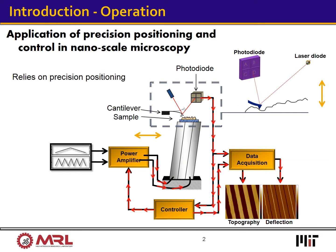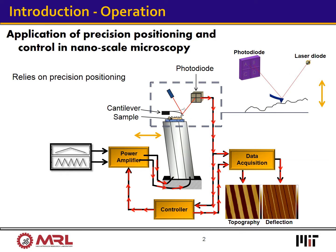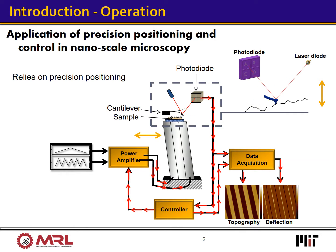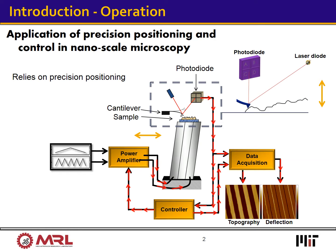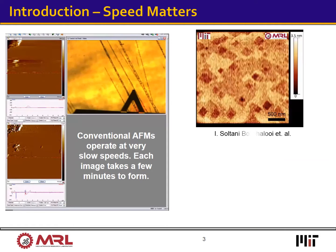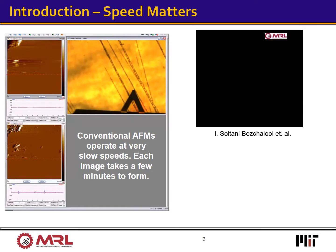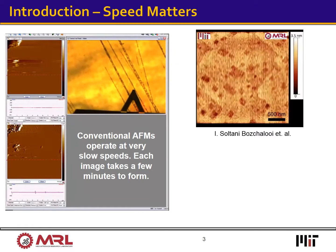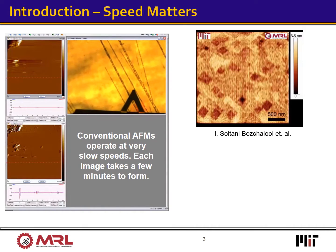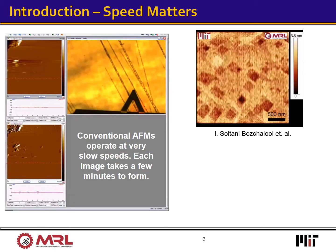Many precision instruments rely on our ability to control the position of a probe or a sample. Scanning probe microscopy, with many industrial and scientific applications, is one example. As you can see in this animation, by interacting a probe with a sample on a point-by-point basis, one can form a 3D image of surface properties.